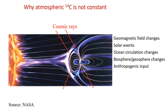Another thing that greatly affects the amount of C-14 is the sun. Solar activity creates a wind of particles that bend our magnetic field lines around the Earth and provide shielding. When the sun is very active, there's more of that shielding and less C-14 production — fewer cosmic rays are able to get in. There are also smaller changes due to ocean circulation, the biosphere, geosphere changes such as volcanoes, and anthropogenic inputs such as fossil fuel burning and nuclear testing.